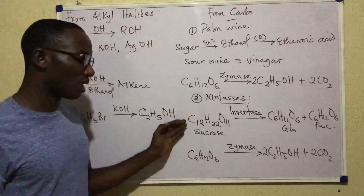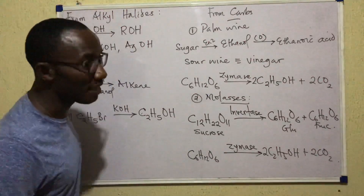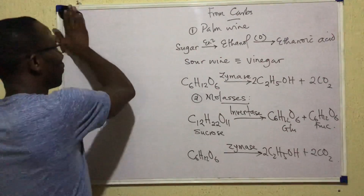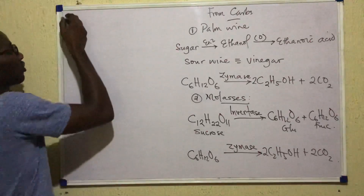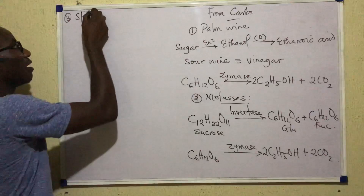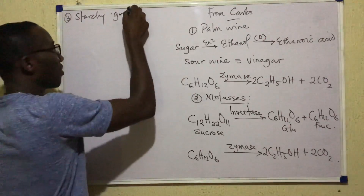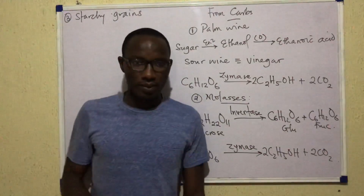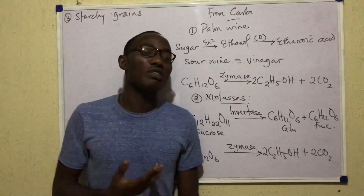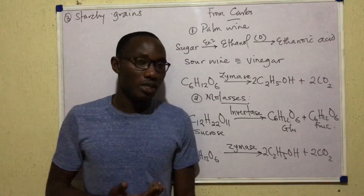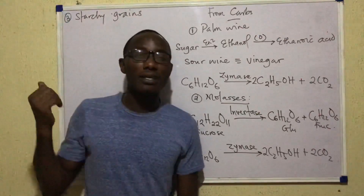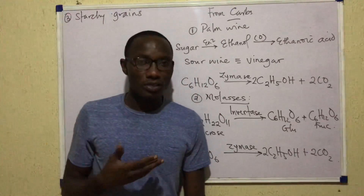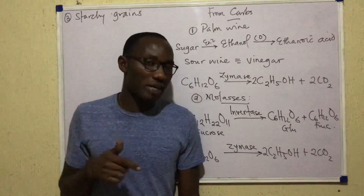Finally, it is possible to start the preparation of ethanol using starch. Starchy raw materials such as grains are rich in starch. When those grains are used to prepare ethanol, the yield is usually high, and they seem to be the commonest of the three sources used for preparing ethanol. That ethanol is otherwise called grain alcohol.